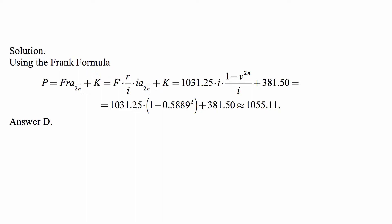And then we note that we are given R over I, so if we rewrite this as R over I times I, then F times R over I is 1000 times 1.03125, so 1031.25 times I, times 1 minus V to the N over I.